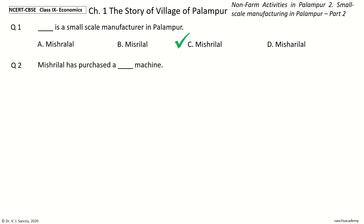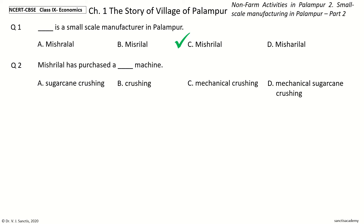Question 2: Mishrilal has purchased a dash machine. The options are Shurakane crushing, Crushing, Mechanical crushing, Mechanical shurakane crushing. And the answer is Mechanical shurakane crushing. So, Mishrilal has purchased a mechanical shurakane crushing machine.